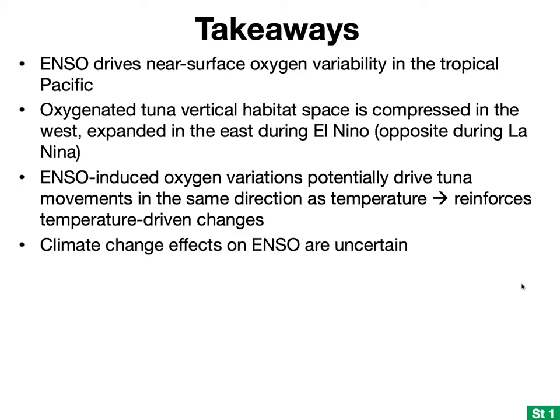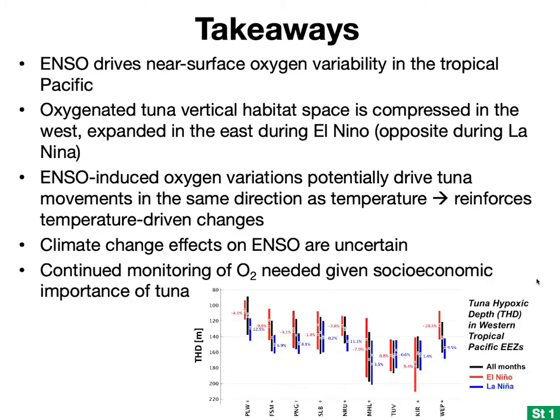Projected changes in ENSO frequency and intensity with climate change are still somewhat uncertain, but if frequencies or intensities do increase as we think they might, this would potentially lead to greater variability in available vertical habitat space and less stable year-to-year tuna supplies in certain regions. Some studies have suggested that future warming may permanently shift the tropical Pacific into a more El Niño-like state, which could shrink oxygenated tuna vertical habitat space in the west more permanently and push populations eastward. We really want to continue monitoring these changes in oxygen over time, given the potentially important effects on development in the region.